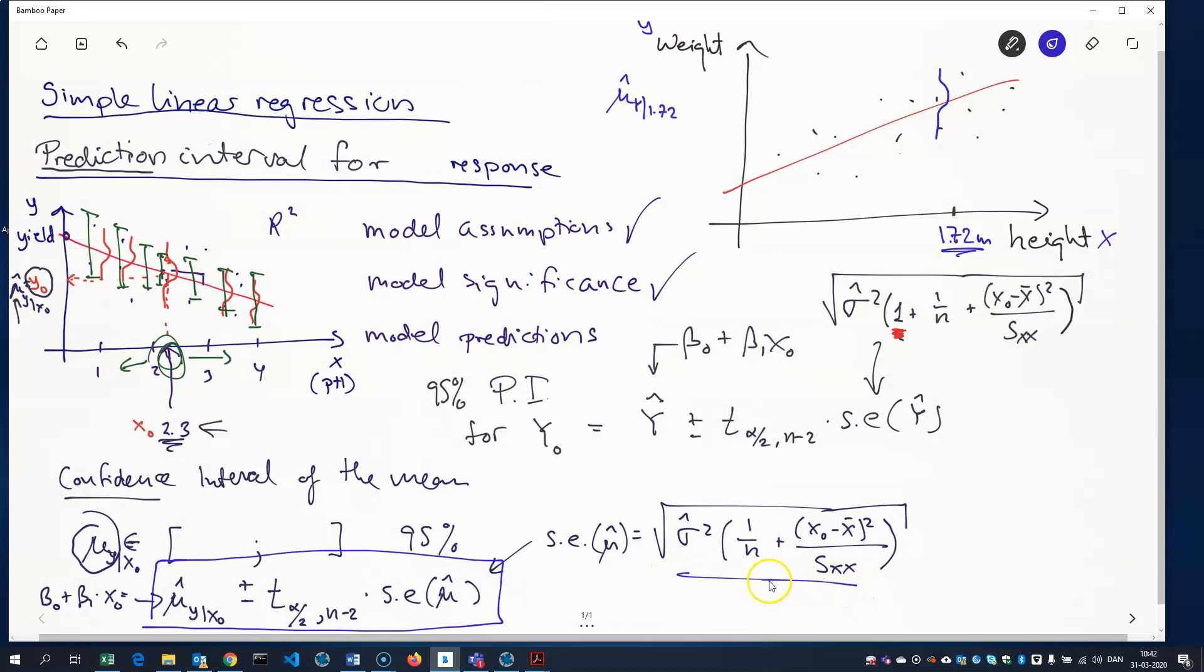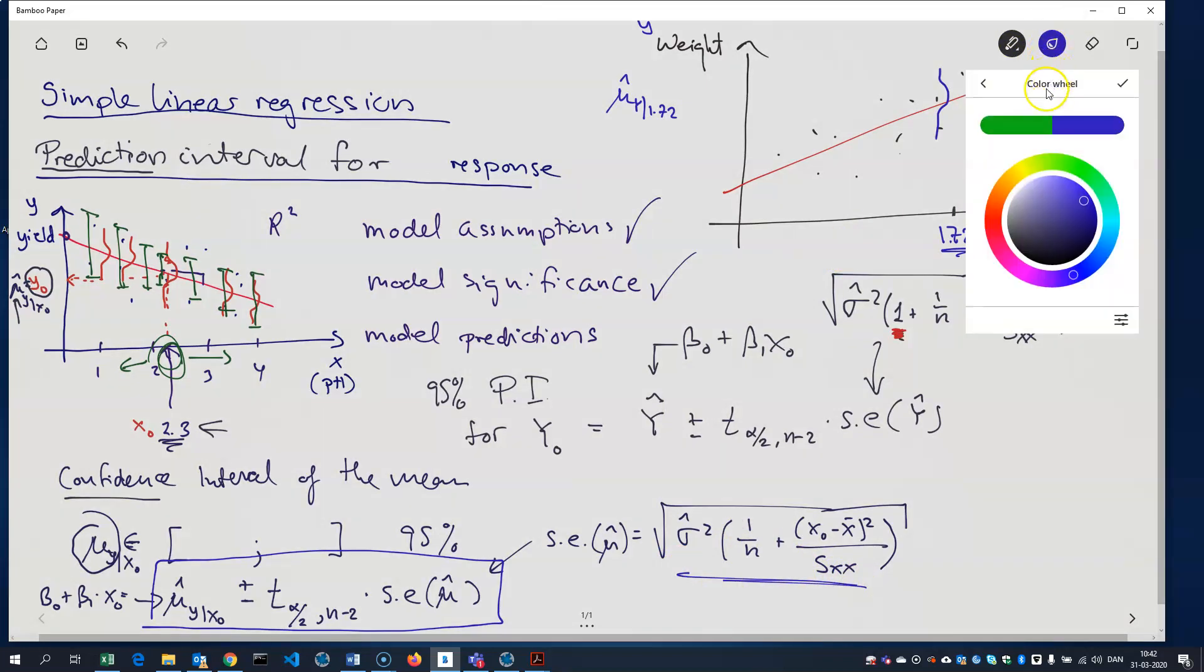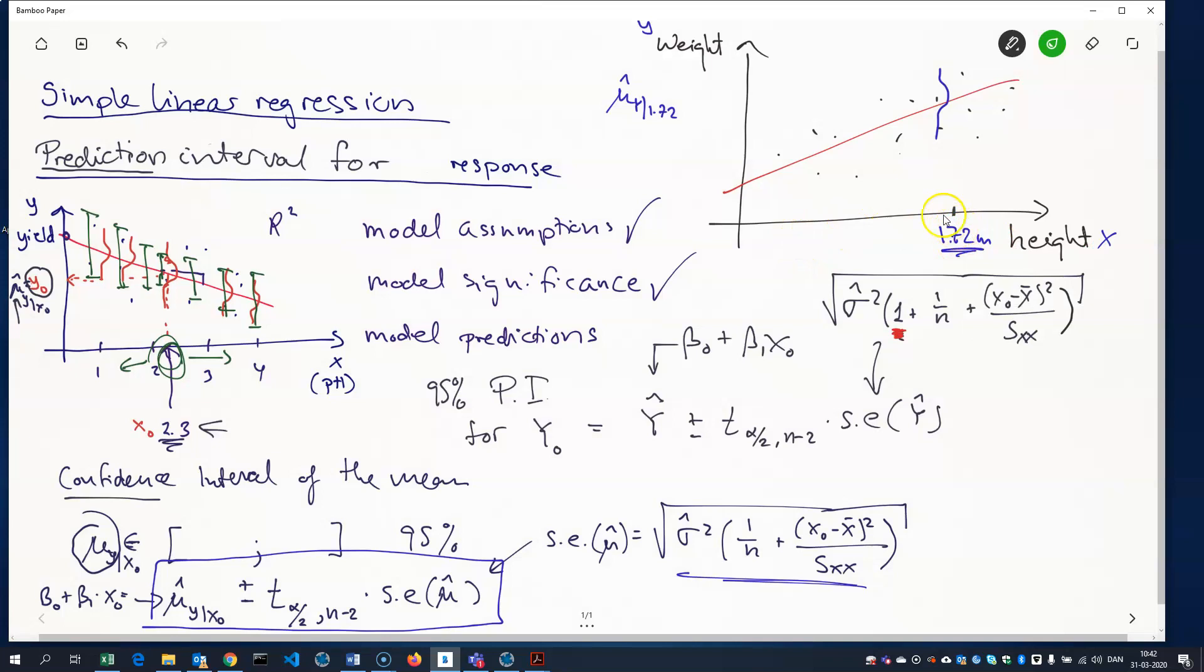Or I could try to predict one single weight. That is, one single person's weight, one of the 50 people's weight. I know that that person has this height, but what is his weight? My model could make a prediction for that, but that would be harder to predict. So the interval would be somewhat more smeared out. It would be a wider interval.